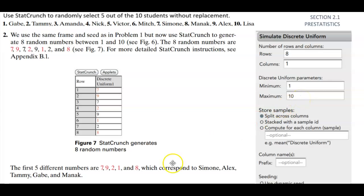I'm going to open up StatCrunch and it says we want to make sure we can find the simulation of a discrete uniform. We have a number of rows and columns. Since we're picking out eight, we're going to have eight rows and we're going to use one column.